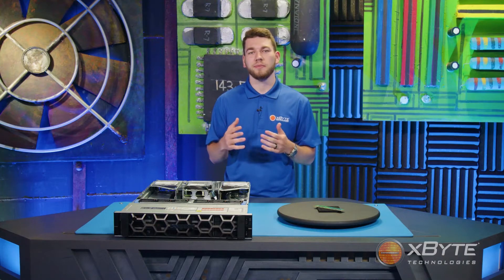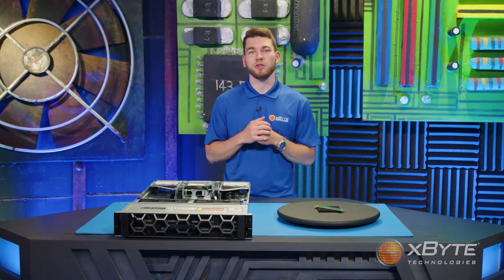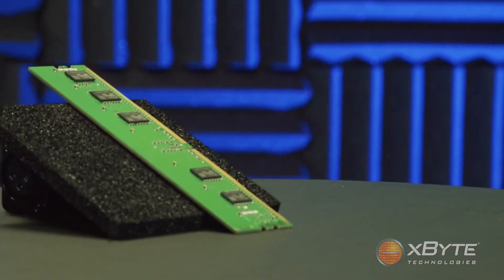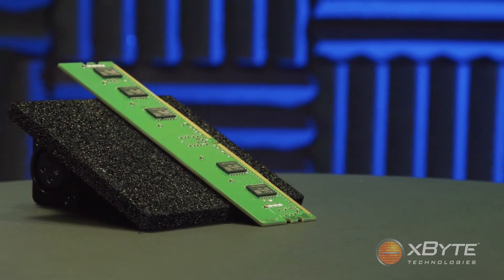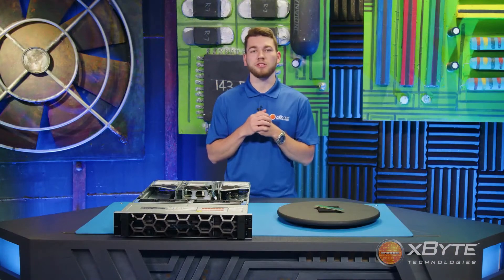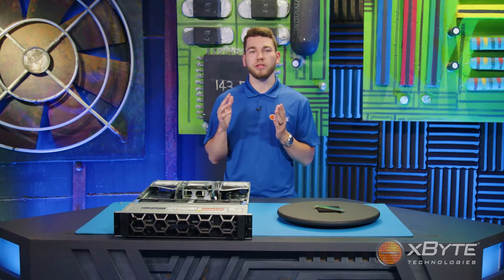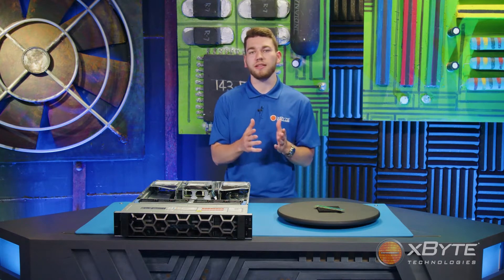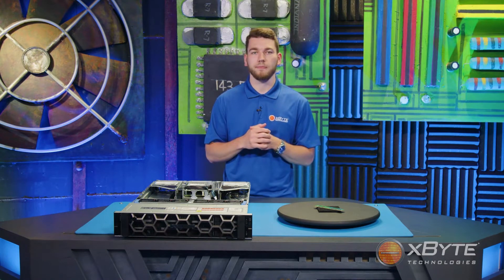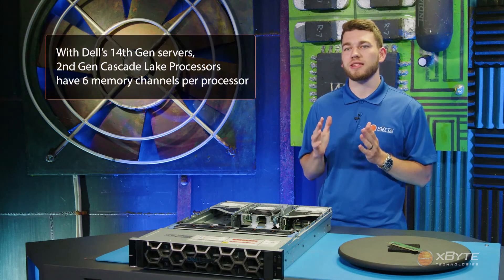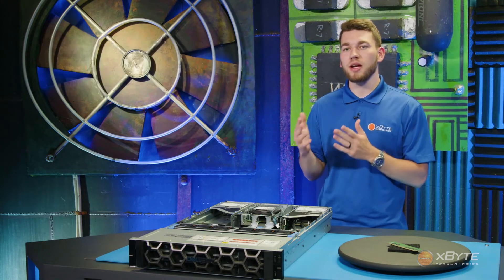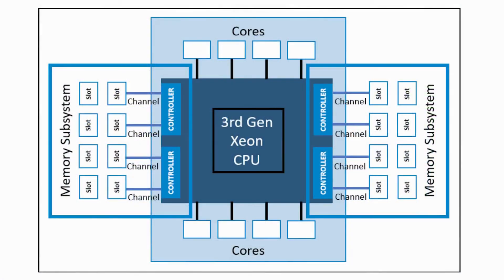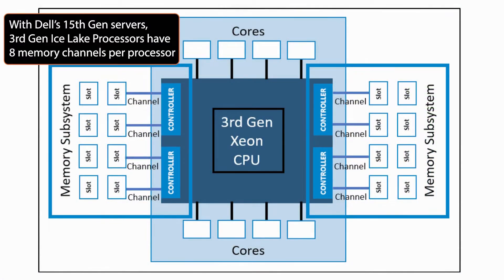Let's take a look at the memory channels themselves. Each processor has a specified amount of memory channels within the chip, and the amount of memory channels is determined by the generation of that specific processor, so they differ between Dell's 14th Gen and 15th Gen servers. With 14th Gen servers, the 2nd Gen Cascade Lake processors have 6 memory channels per processor. On the other hand, Dell's 15th Gen servers use 3rd Gen Ice Lake processors, each of which have 8 memory channels per processor.